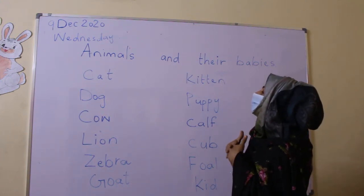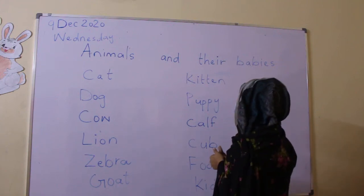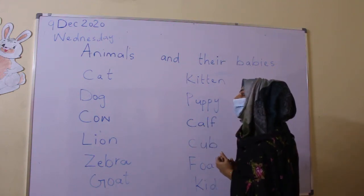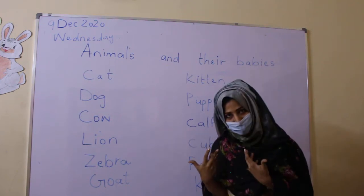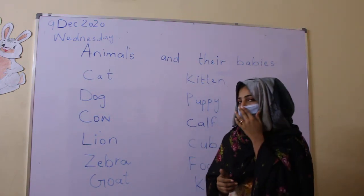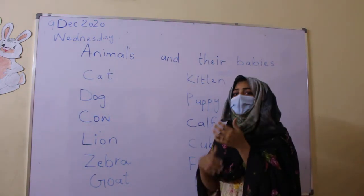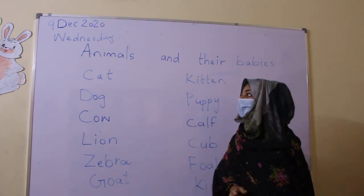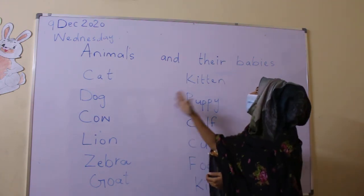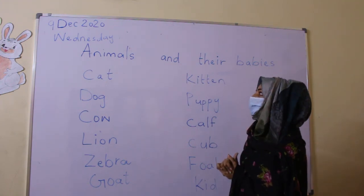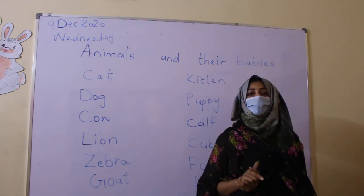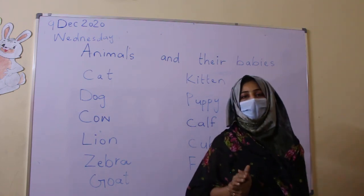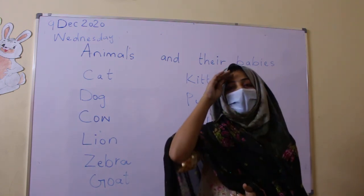So these are the names of animals and their babies. Every animal has parents like us. Hope you enjoyed this class and also understand this topic. You have to learn these names with their babies' names, and also you have to do this work in your class work and homework of your English. Take care of yourself.